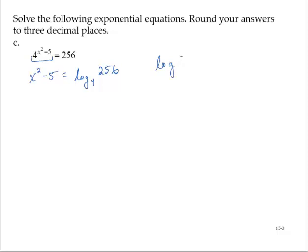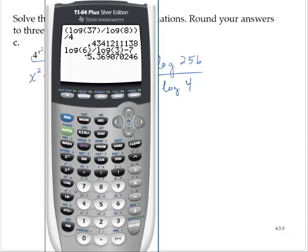And if you don't recognize this, remember you can use the change of base rule. You could convert that to log of 256 over log of 4. And on the calculator, we can find that that is exactly 4.